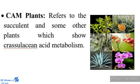CAM Plants - Crassulacean Acid Metabolism: Certain plants, especially succulent plants such as Opuntia, Cacti, Bryophyllum, Kalanchoe, Pineapple, etc., which grow under semi-arid conditions, fix atmospheric carbon dioxide in the dark. Since the process was first observed in plants belonging to the family Crassulaceae, it was named Crassulacean Acid Metabolism or CAM cycle.